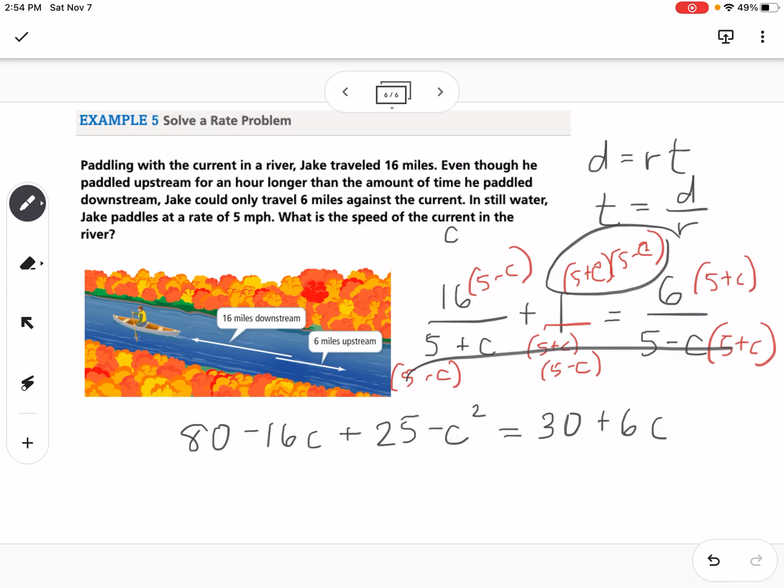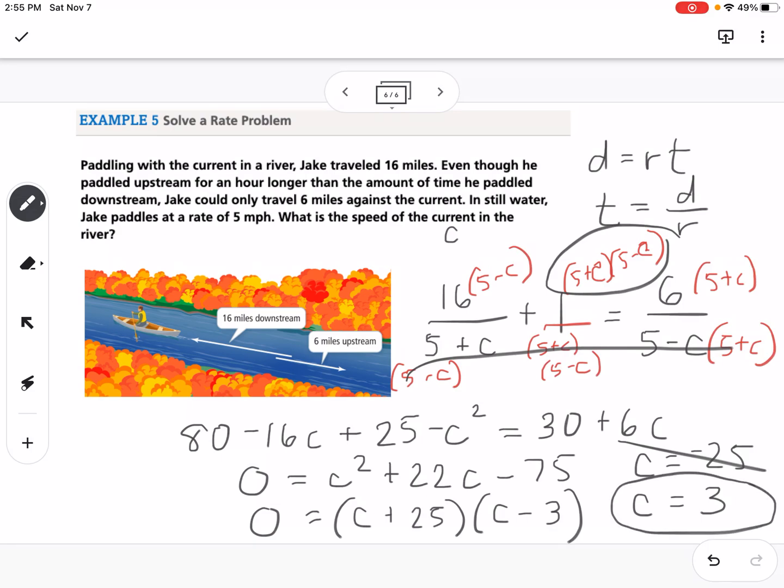So now I'm going to get this all over to the right-hand side, so I can make the C squared positive. So this would become C squared plus 22C minus 75, and then we can factor that and say C plus 25 and C minus 3. So that means that we get negative 25 and 3. Well, since this is a real-world problem, we know that the rate can't be negative 25. So our only solution would be 3, so that we can say that the current is going at 3 miles per hour. Okay, so that is solving rational equations.